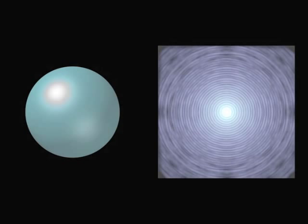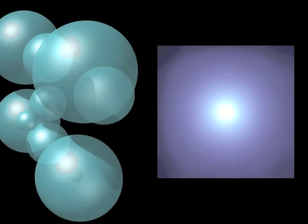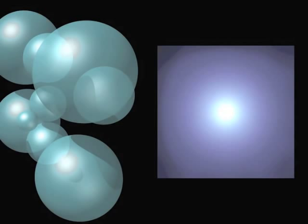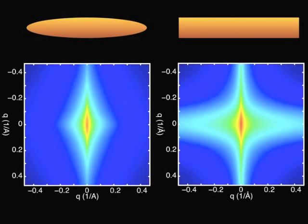In case of polydispersity, we would see a superposition of scattering patterns, leading to a smooth function as shown here. If we would have aligned elongated objects in our beam, we would get an anisotropic scattering pattern as shown here.